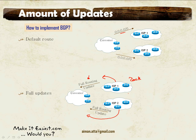Receiving the full BGP routing table from the ISP is good, but it comes with a cost — you need routers that can handle such an amount of information, with sufficient memory and CPU horsepower to process all these updates. However, you will be reaching each and every destination using the best path.